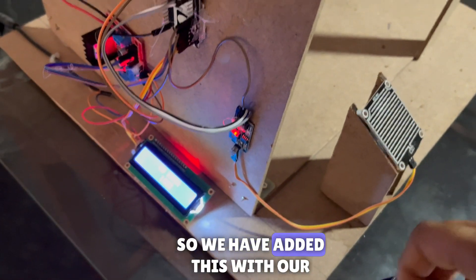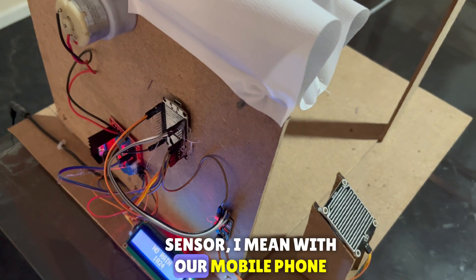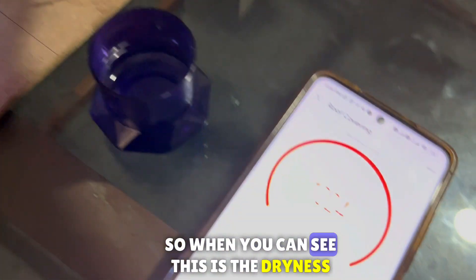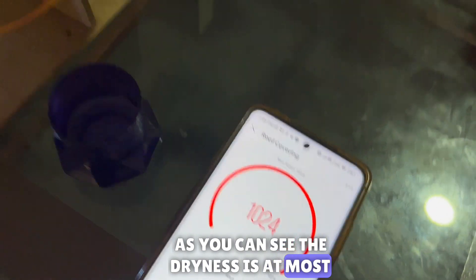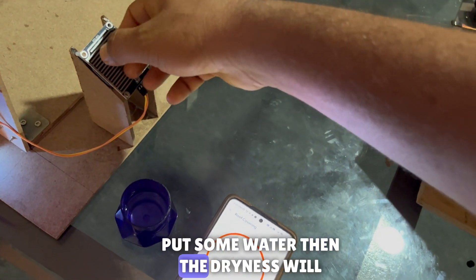So we have connected this with our mobile phone. You can see this is the dryness level. As you can see, the dryness is at maximum. When I put some water, then the dryness will reduce.